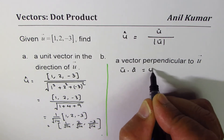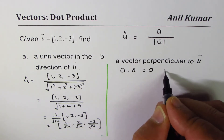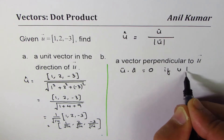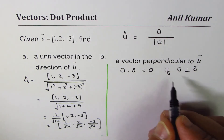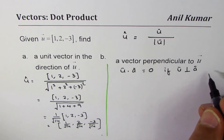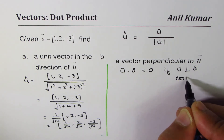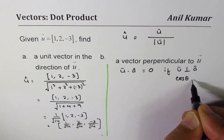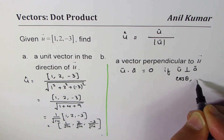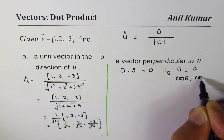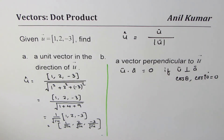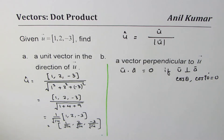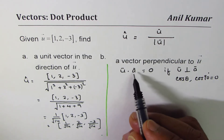Let's consider vector a to be perpendicular to u. Then the dot product of vector a and u should equal 0. The reason is that cos(θ), which in this case is cos(90°), equals 0. That's the whole idea.